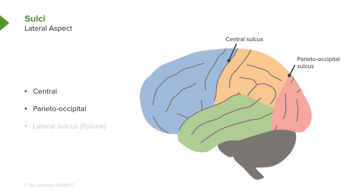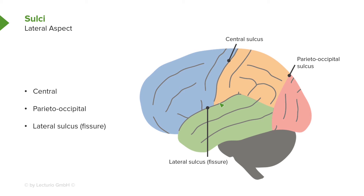The next sulcus separates the parietal lobe from the occipital lobe, and the occipital lobe from the temporal lobe inferiorly. This is the parietal occipital sulcus. The third and final major one is the lateral sulcus, which more precisely is a lateral fissure.